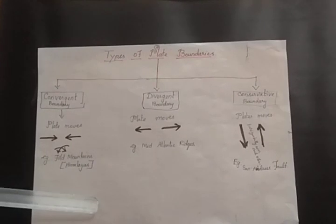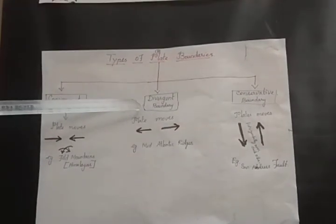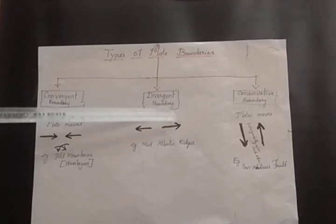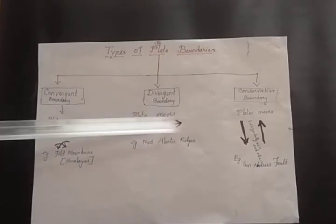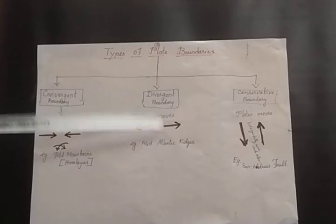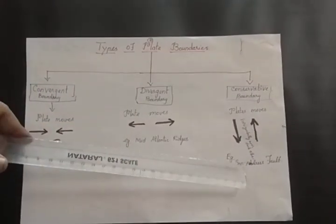In a divergent boundary, plates move away from each other. The best example of a divergent boundary is the Mid-Atlantic Ridge. In a conservative boundary, plates move horizontally past each other. The best example of a conservative boundary is the San Andreas Fault.